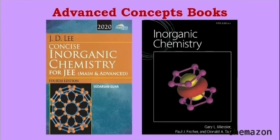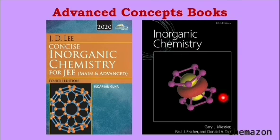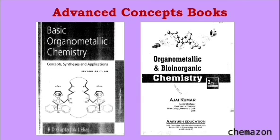Let us see a few more advanced chemistry books. This is Concise Inorganic Chemistry by J.D. Lee. And this is another very good book, Inorganic Chemistry by Gary Miesler, Paul Fisher and Donald Tarr. If we talk about some specific topics like organometallic chemistry, these two are very good books.